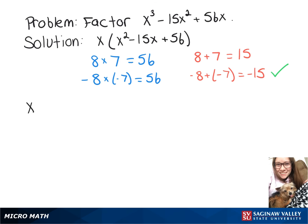Now we can rewrite x cubed minus 15x squared plus 56x as x, since we factored that out in the beginning, and that will be times x plus something times x plus something else.